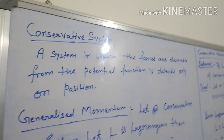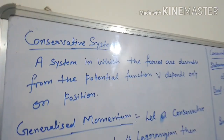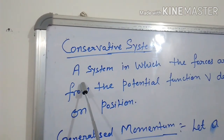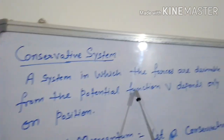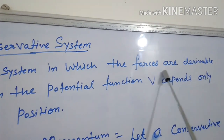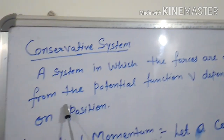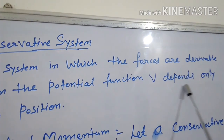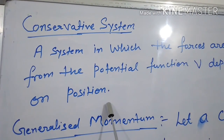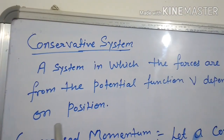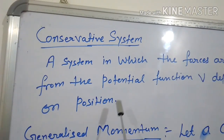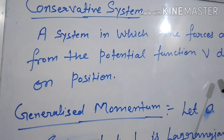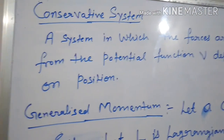At first, we will define a conservative system. A conservative system may be defined as a system in which the forces are derivable from a potential function V that depends only on position. That means we have del V upon del QK dot equal to zero.